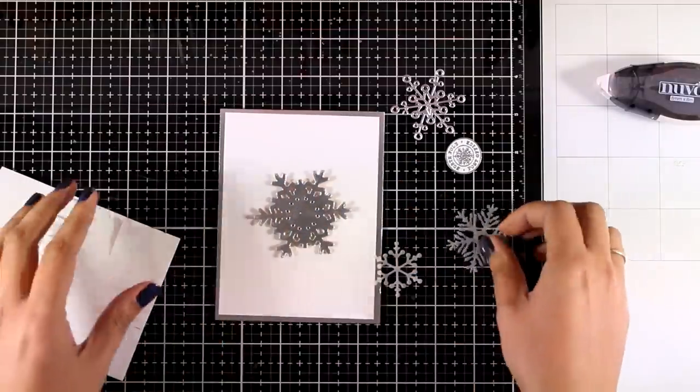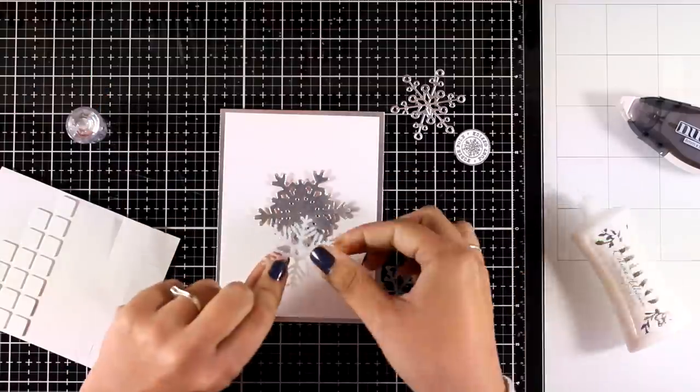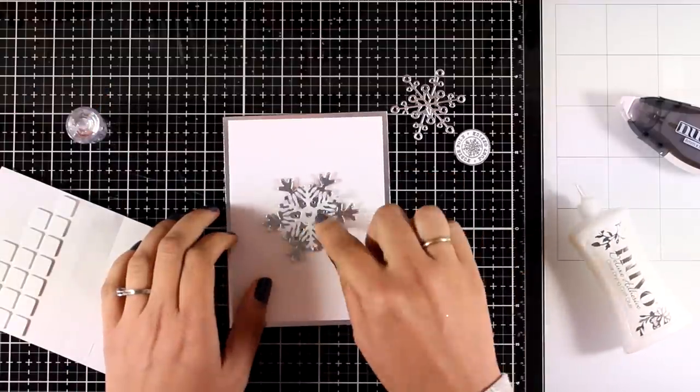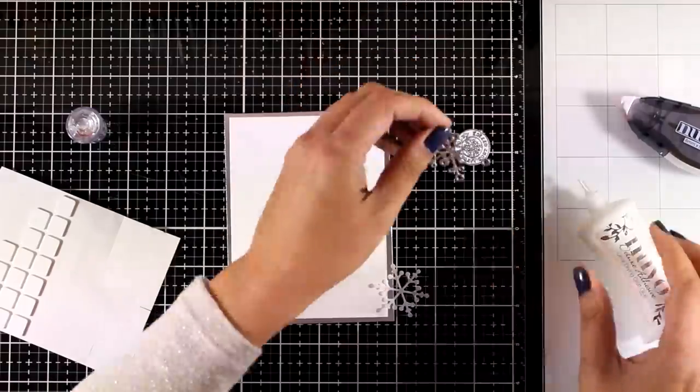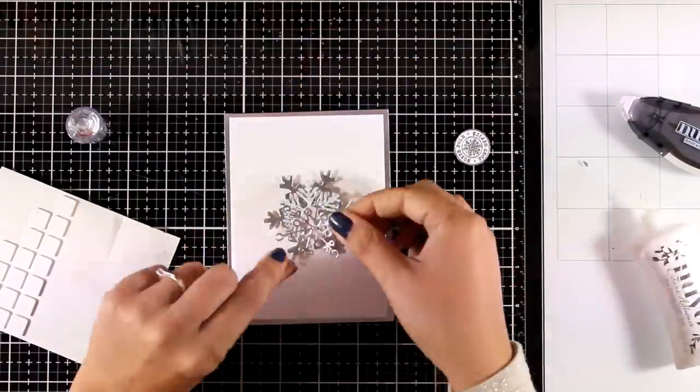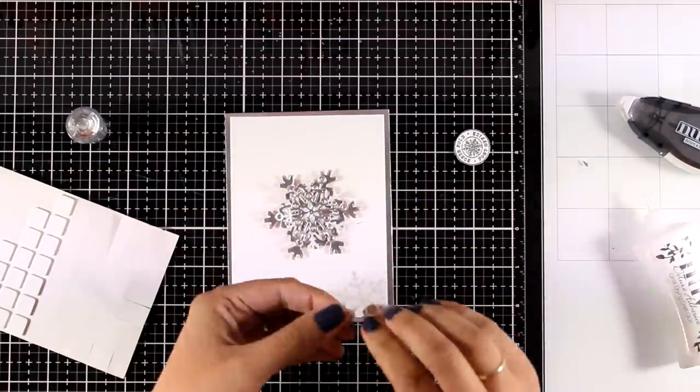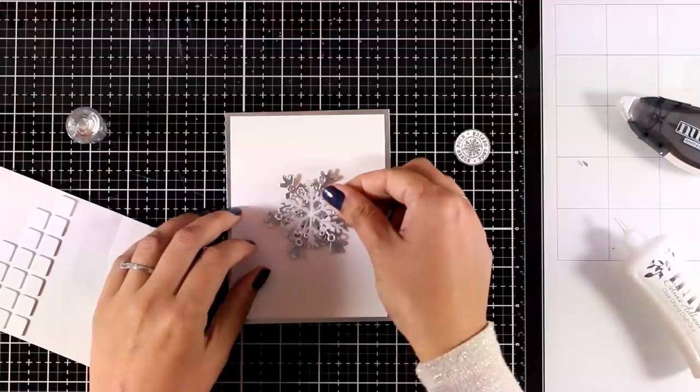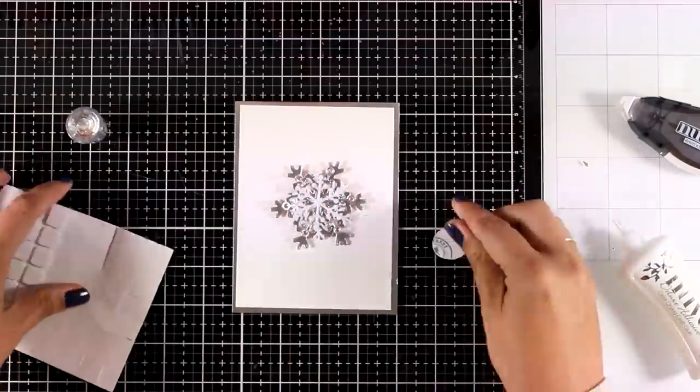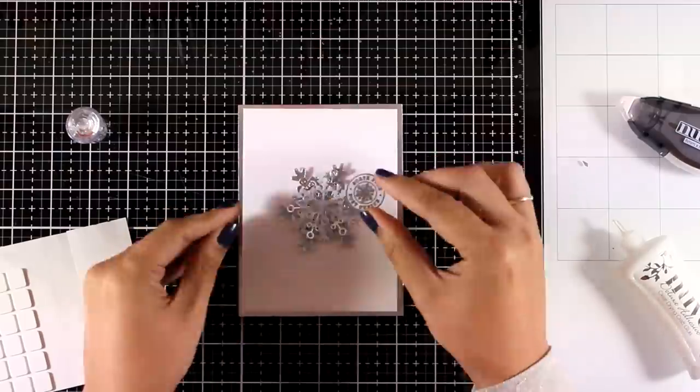Now I'm going to stack the snowflakes one on top of the other and I'm going to create a lovely medallion at the center of my card. Now I want my snowflake to be dimensional and fluffy so I am using foam squares as well as glue as I stack one on top of the other.